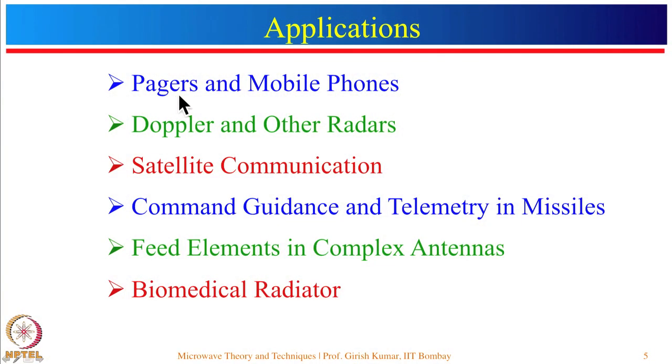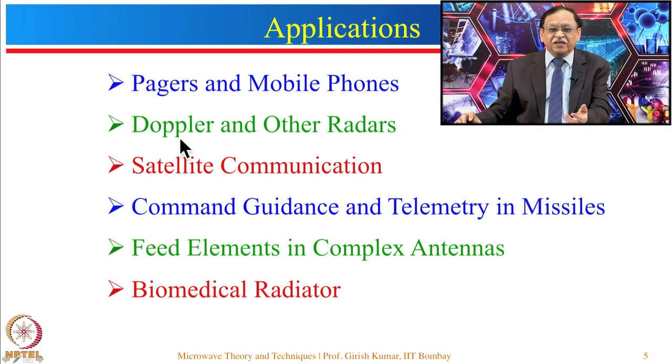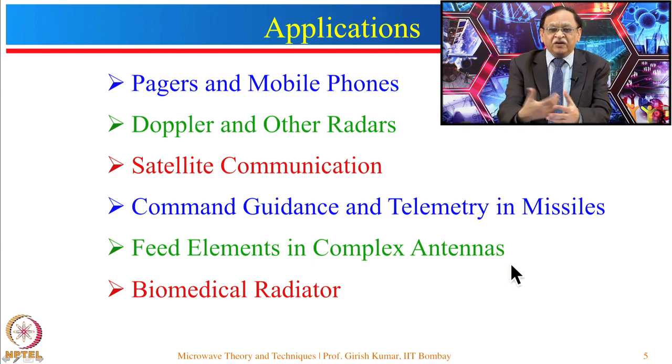Because of so many advantages, microstrip antennas find several applications. They have been used in pagers and mobile phones, Doppler and other radars, satellite communication, missile guidance systems, feed elements in complex antennas, and biomedical radiators. This is not a complete list — there are many other applications of microstrip antennas.